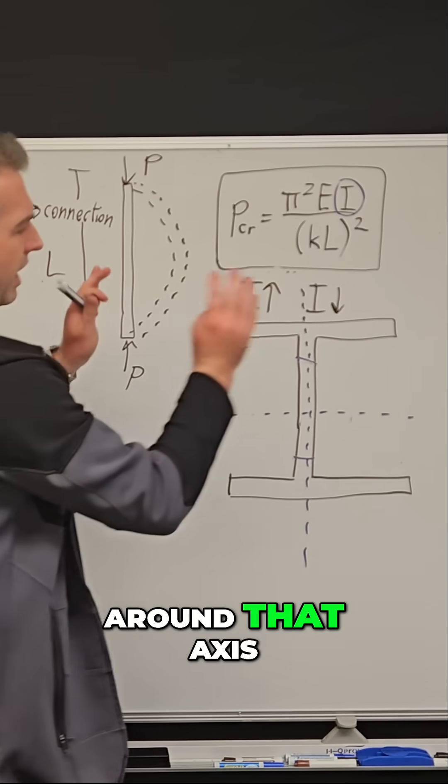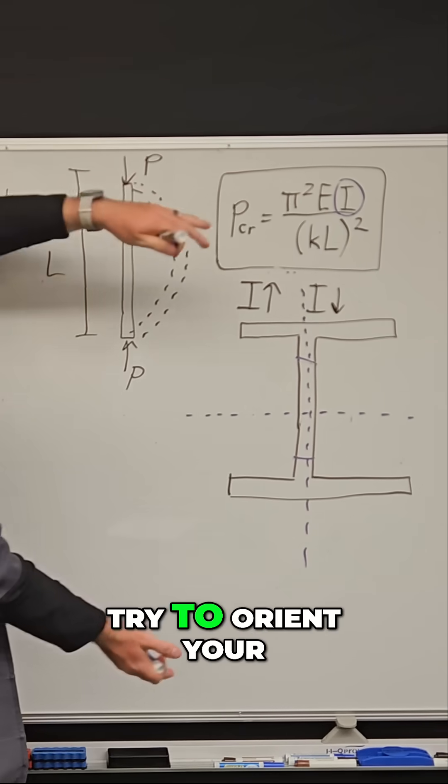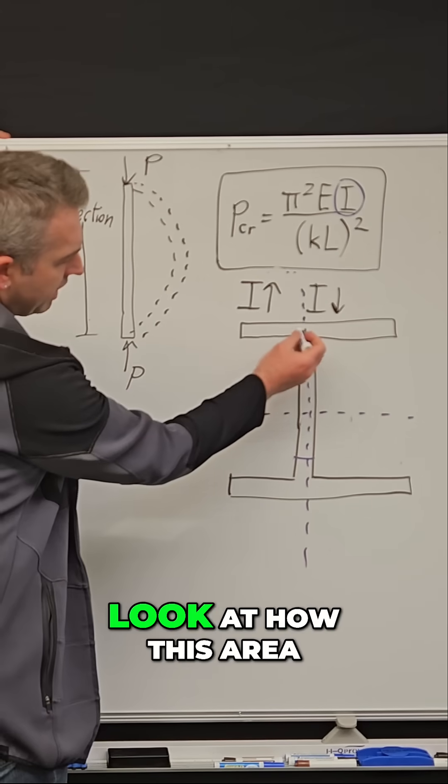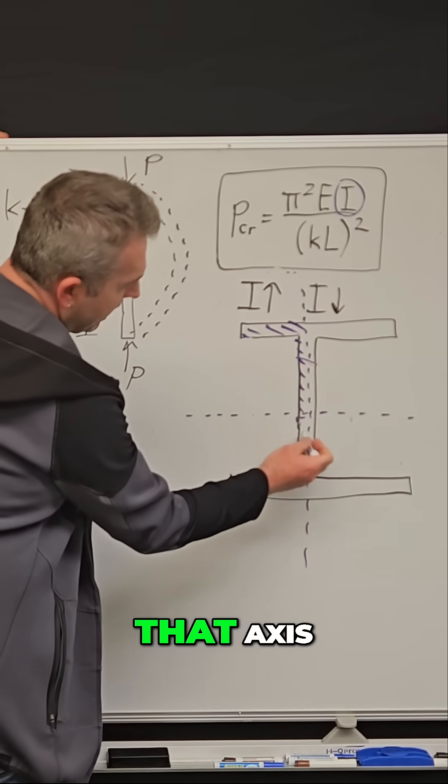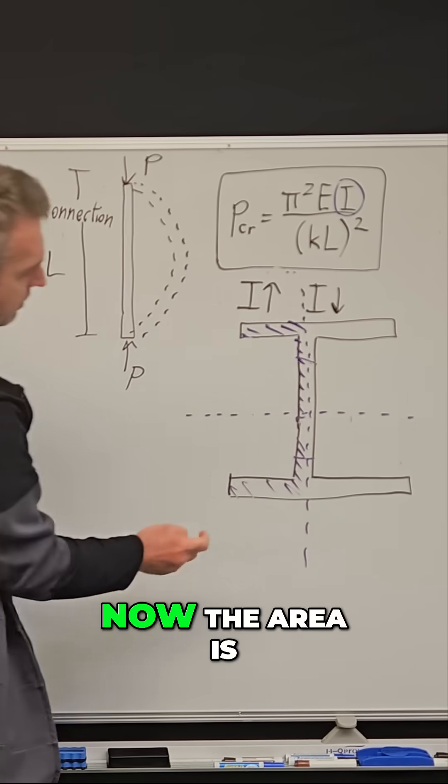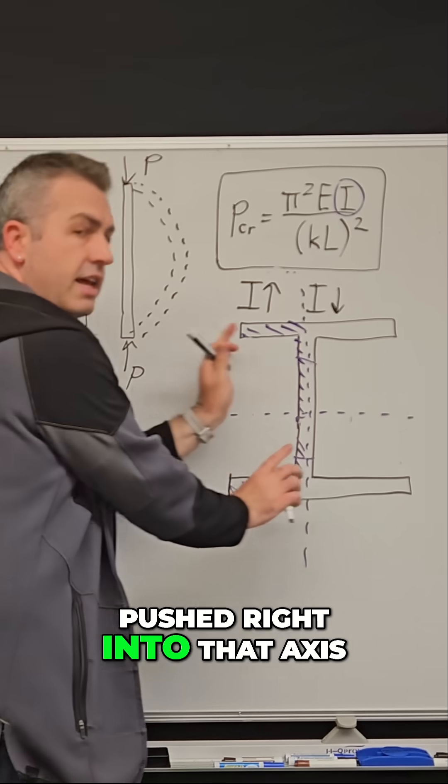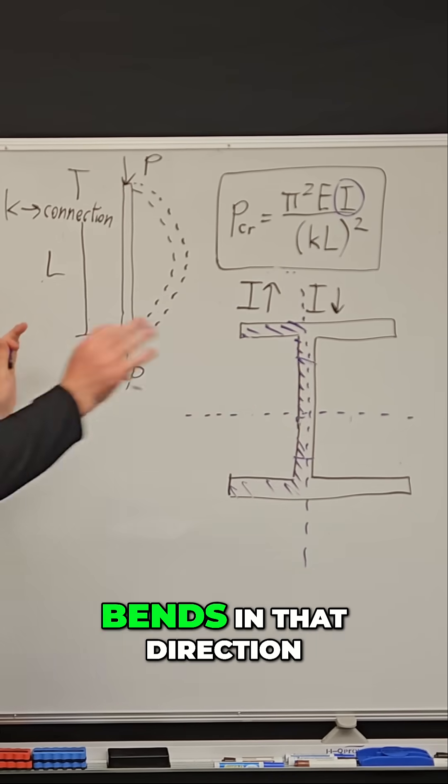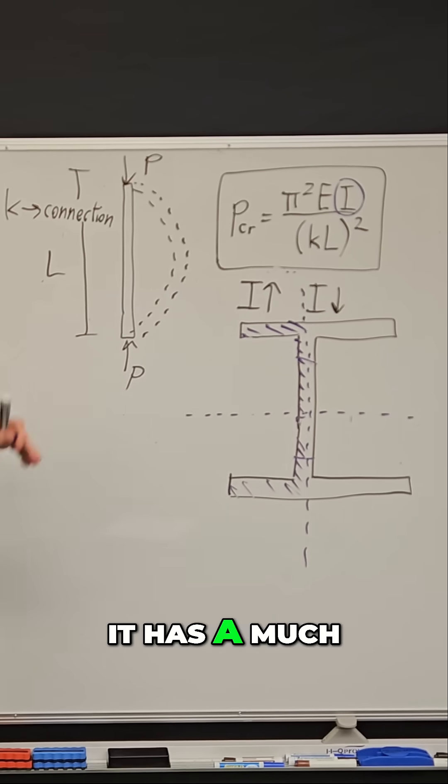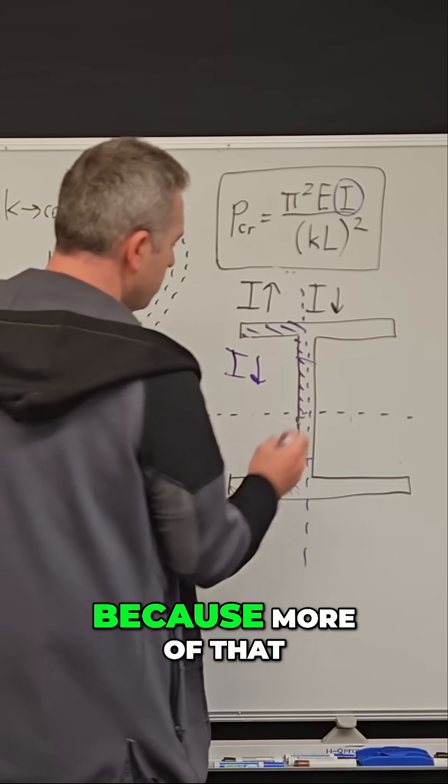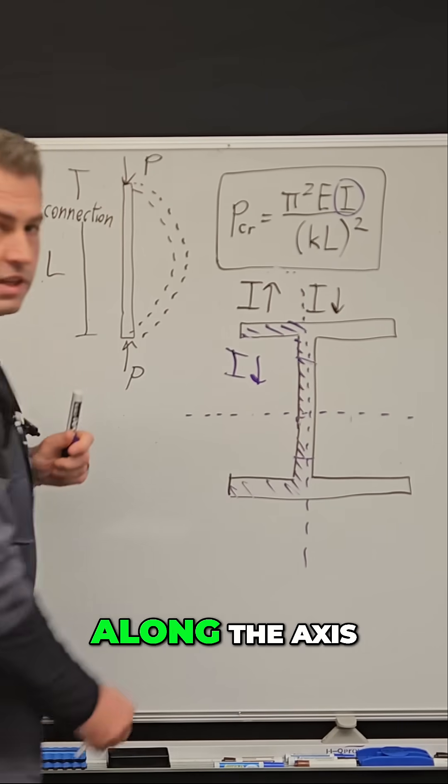And if it buckles around that axis, well, try to orient your head this way and look at how this area is in relation to that axis. Now the area is pushed right into that axis. So if the column bends in that direction, it has a much lower moment of inertia because more of that area is concentrated right along the axis.